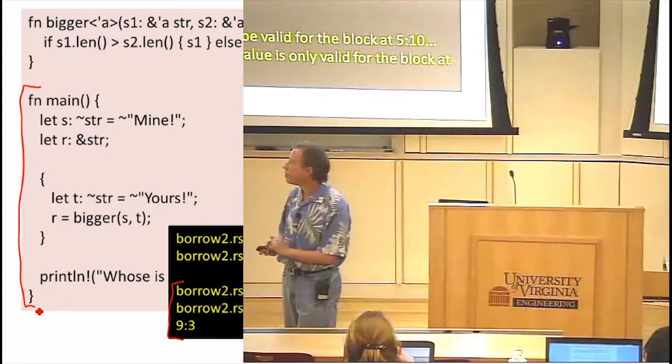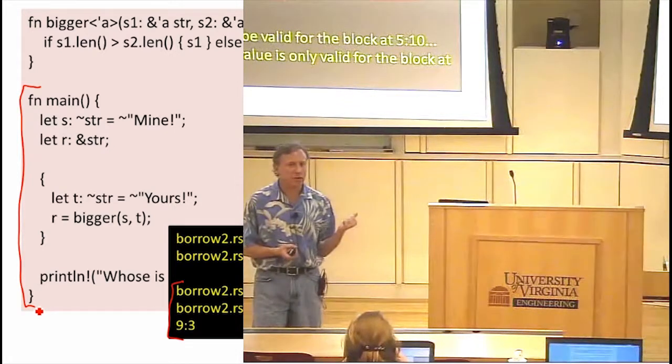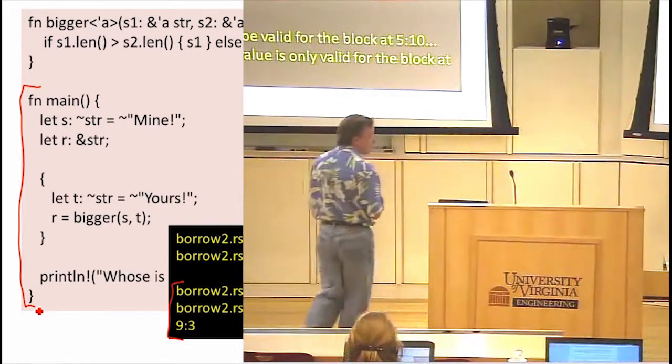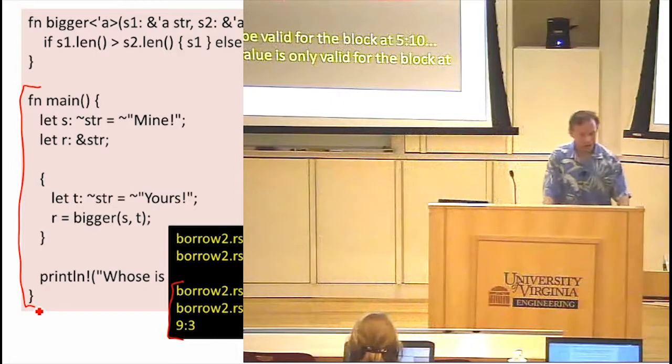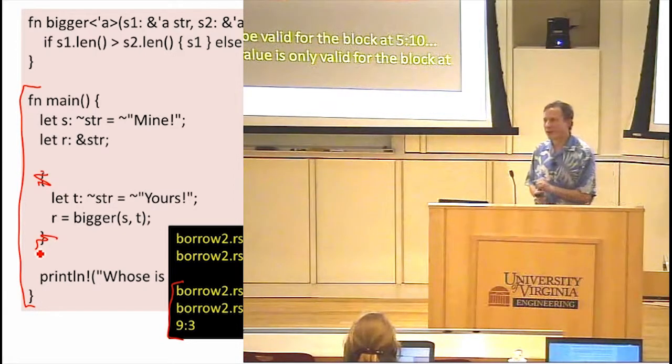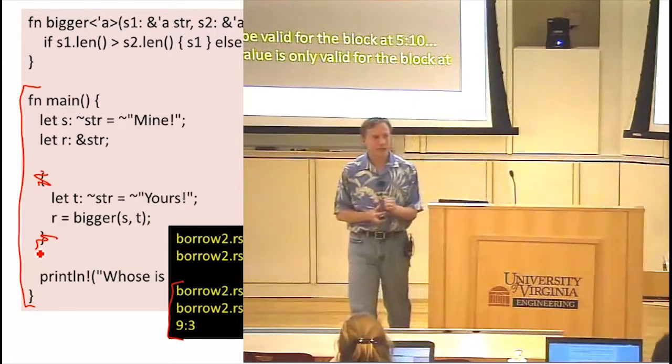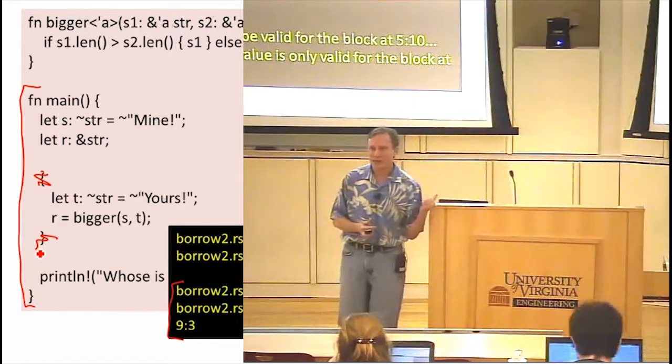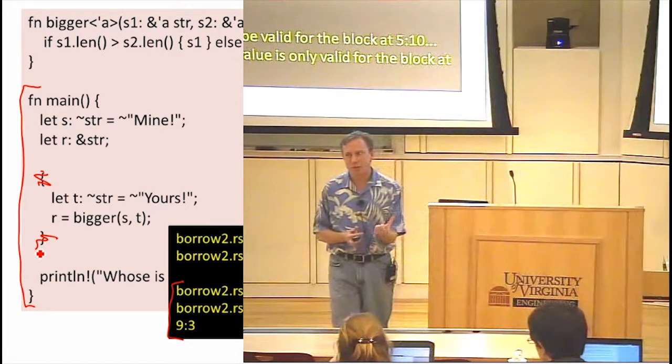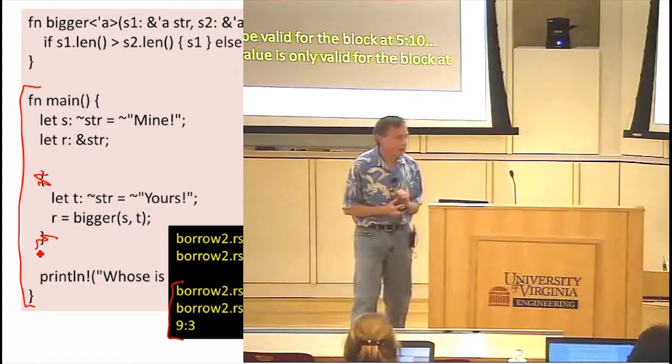One of the challenges in doing text-based errors like this is you can't highlight the chunk of code that you want to highlight. You've got to basically print it out or give line numbers and things. So it's a little bit hard to interpret these messages. Does that make sense why it's an error? Why we can't have that result from bigger live for a lifetime beyond that scope? In this case, we could definitely make things work just by removing those brackets. Then the lifetime of t extends to the end of that scope and the lifetime of the result will be the minimum of those two lifetimes, which extends to the end of the scope.